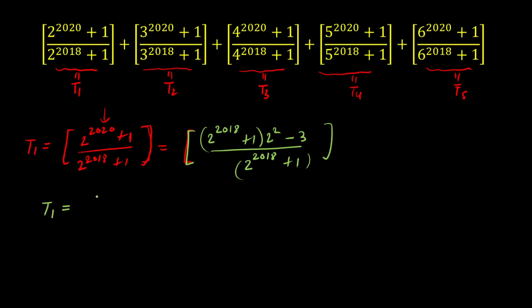Now we have the greatest integer function of 4 - 3 / [2^2018 + 1]. This fraction is definitely less than 1 and greater than 0, so 4 minus this fraction inside the greatest integer function gives us 3.